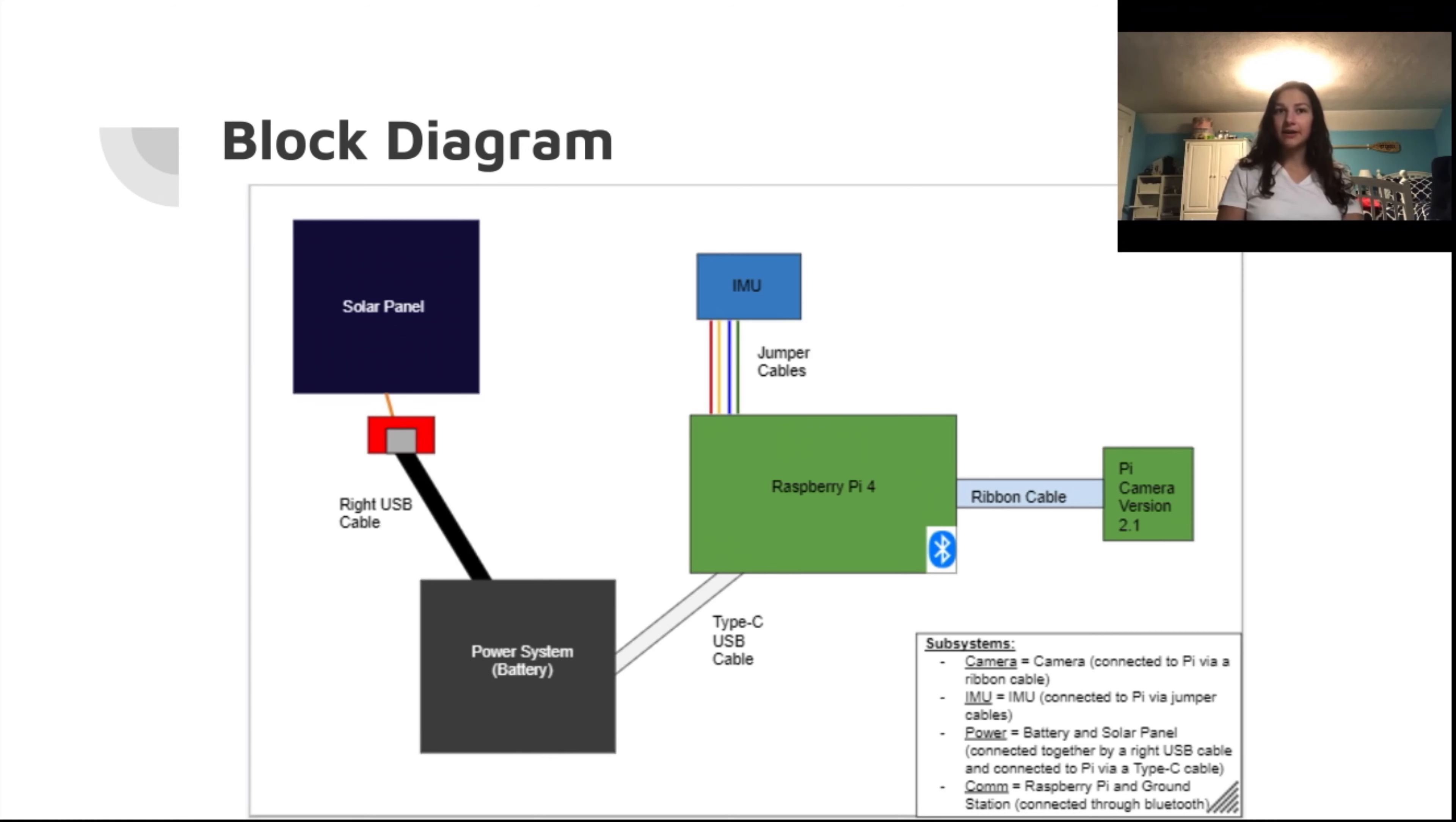This block diagram shows each subsystem interface. The solar panel charges the battery through a right angle USB and the battery then provides power to the Raspberry Pi through a USB-C cord. The Raspberry Pi connects to the IMU and the camera, as well as connecting via Bluetooth to the ground station laptop.